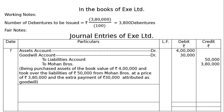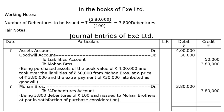Next, we are paying Mohan Brothers 3,800 debentures. Mohan Brothers account debited Rs. 3,80,000, both debit and credit. Being 3,800 debentures of Rs. 100 each issued to Mohan Brothers at par in satisfaction of the purchase consideration. And this is the final answer.